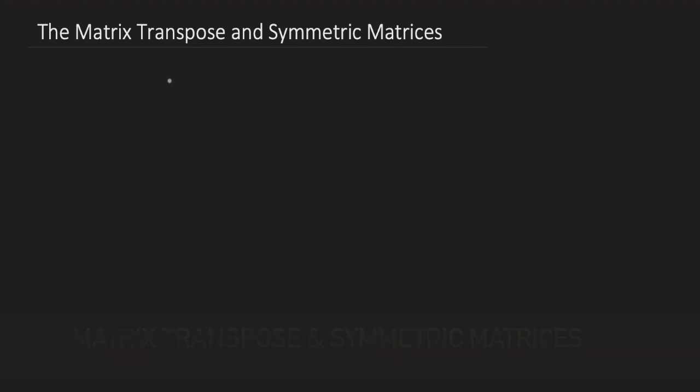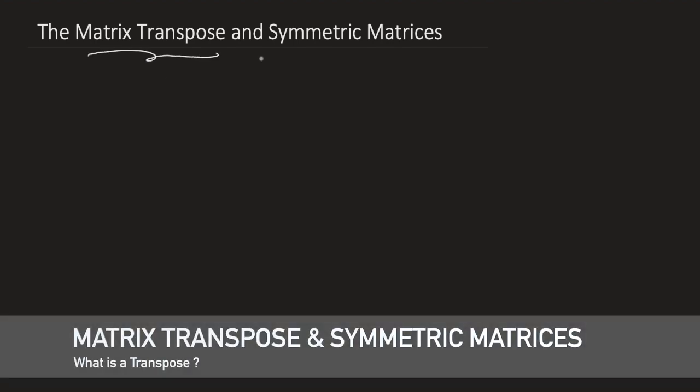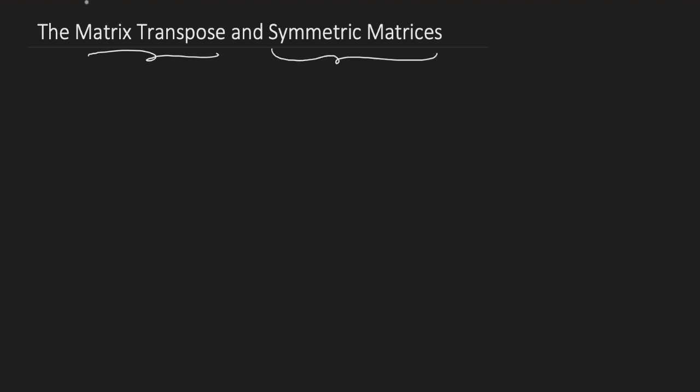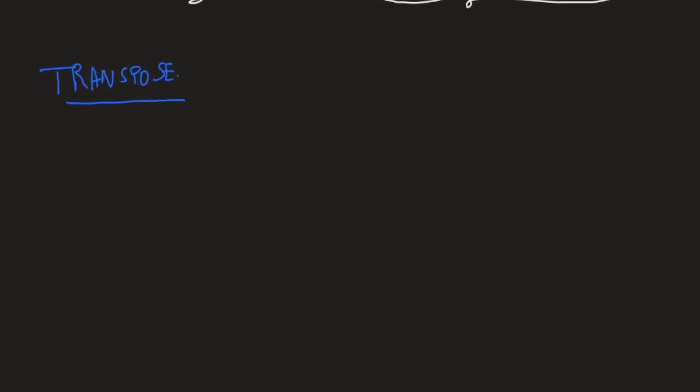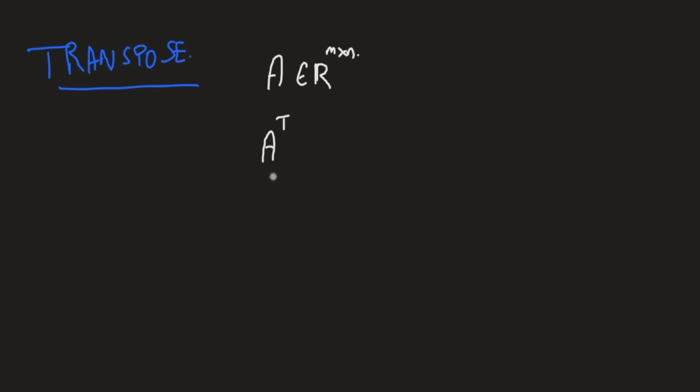So in this one we'll be talking about two topics: the matrix transpose or the transpose operator and symmetric matrices. Let's start with the transpose. Now if you open a dictionary, transpose means to change places with each other, that is to exchange places. Well that's what it is. So given a matrix A that is rectangular, so m by n, the transpose of the matrix denoted by A superscript T is a matrix obtained by interchanging the rows and columns of A.